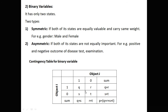In the contingency table, we have object i and object j, each with states 1 and 0. We count how many times each combination occurs: Q is the count where i = 1 and j = 1; R is i = 1 and j = 0; S is i = 0 and j = 1; T is i = 0 and j = 0. The row and column sums are shown, and P = Q + R + S + T.